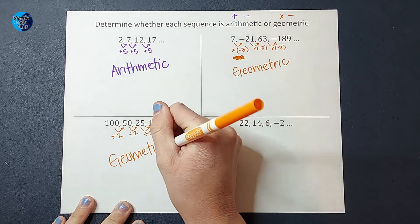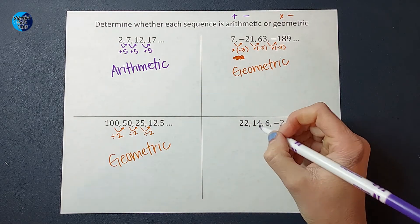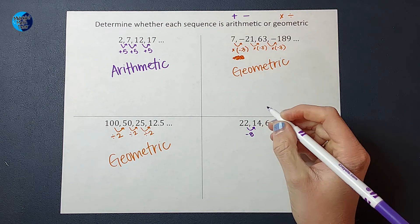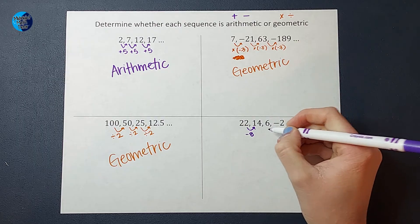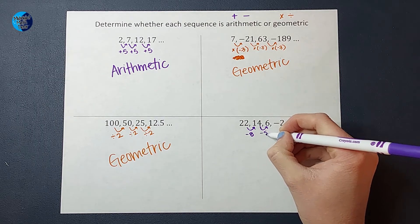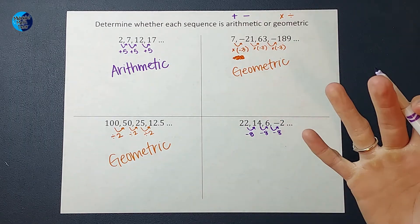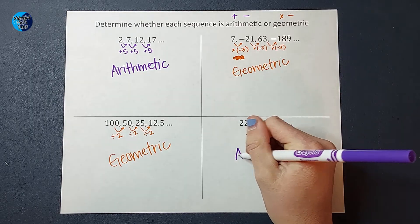Okay, let's take a look at our last one. To get from 22 to 14, I'm thinking we are going to subtract 8. But let's make sure that pattern continues. 14 minus 8 is 6, sweet. And 6 minus 8 is negative 2. So I'm feeling pretty confident that we are subtracting 8 each time, which would make this sequence arithmetic.